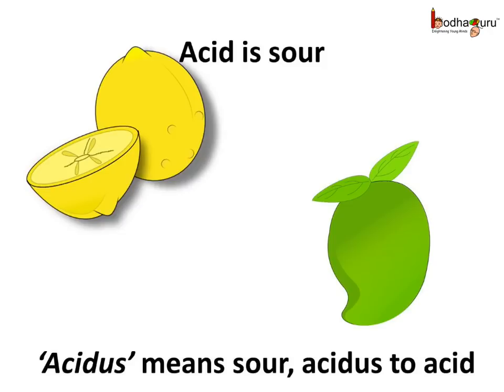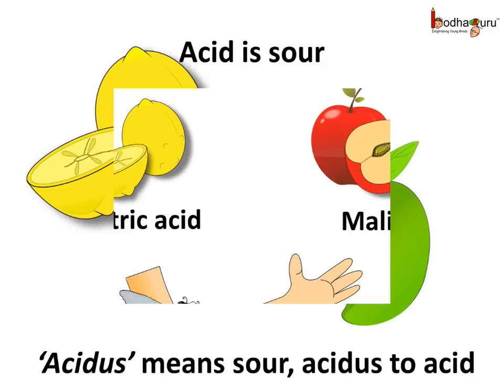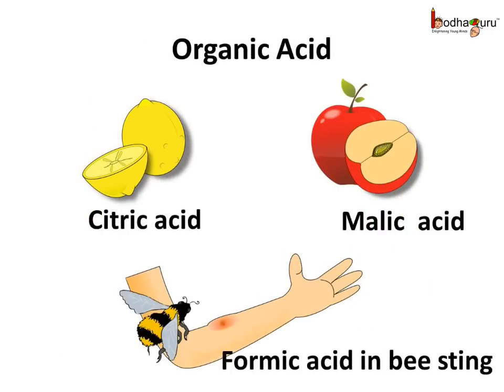So all acids cannot be tasted. Acids found naturally in plants, animals and other living things are referred to as organic acids. For example, citric acid in lemon, malic acid in apples, Vitamin C is actually ascorbic acid, lactic acid is in milk, and common vinegar is called acetic acid. Formic acid is found in bee and ant stings — when an ant stings, it injects acid into our skin causing pain.